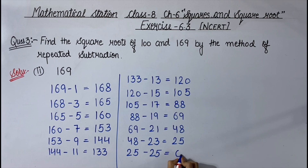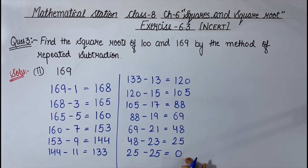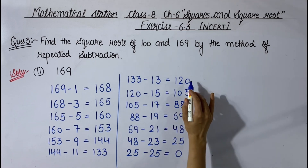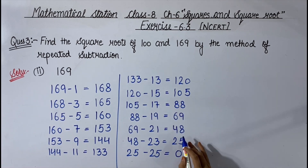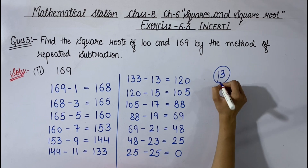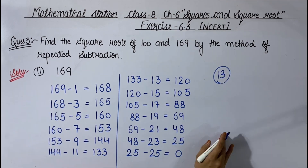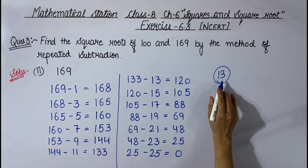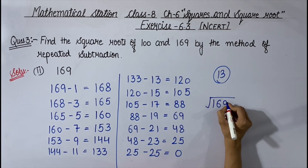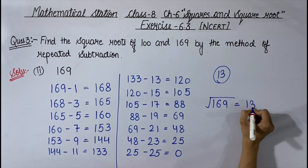25 minus 25 equals 0. Now we have to count how many steps we got the answer 0. So it will be 1, 2, 3, 4, 5, 6, 7, 8, 9, 10, 11, 12, 13. After 13 steps we got the answer 0. So the square root of 169 is equal to 13. This will be the answer.